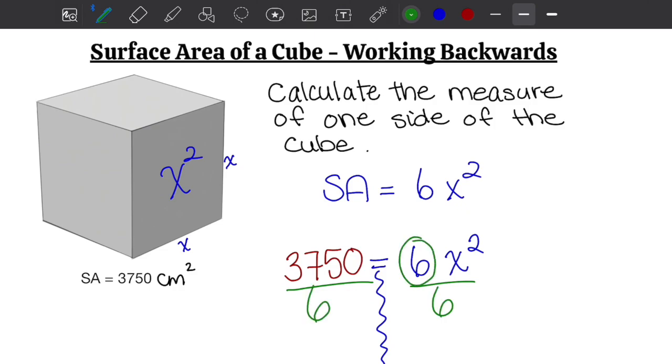Six divided by six is one, so it's now not part of our right side of the equation. The only thing left on our right side is x². Now on the left hand side I have 3750 divided by six, and using our calculator we get 625. So now I have x² equals 625.